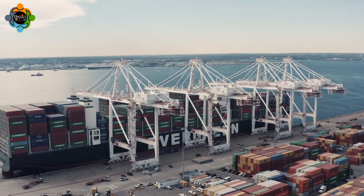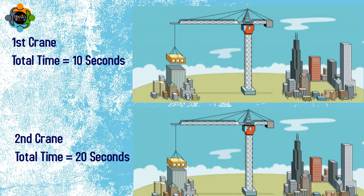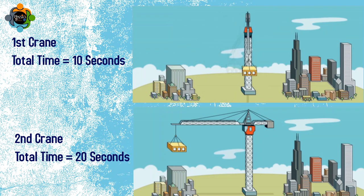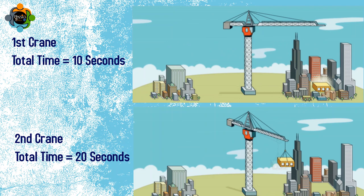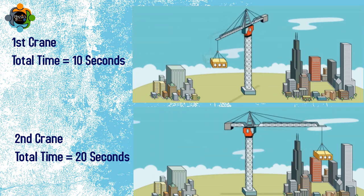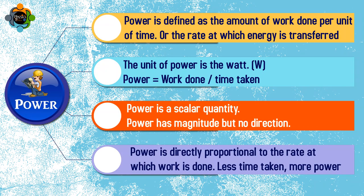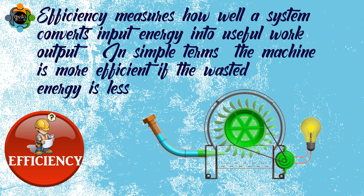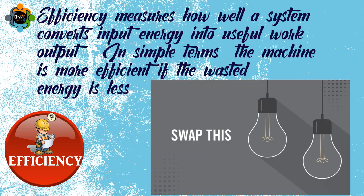Let's compare two cranes to understand the concept of power in physics. Imagine two cranes lifting the same weight to the same height. The first crane takes 10 seconds to complete the task, while the second crane takes 20 seconds — so the first crane is considered more powerful. You can see the basic formula, units, and necessary information on your screen.